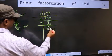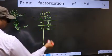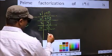Now we have 13. 13 is a prime number, so 13 times 1 is 13. We get 1 here.